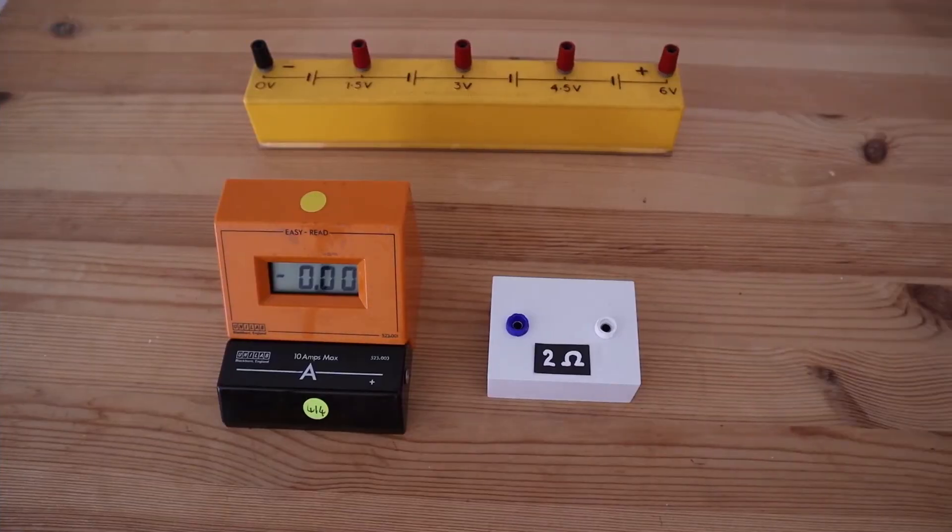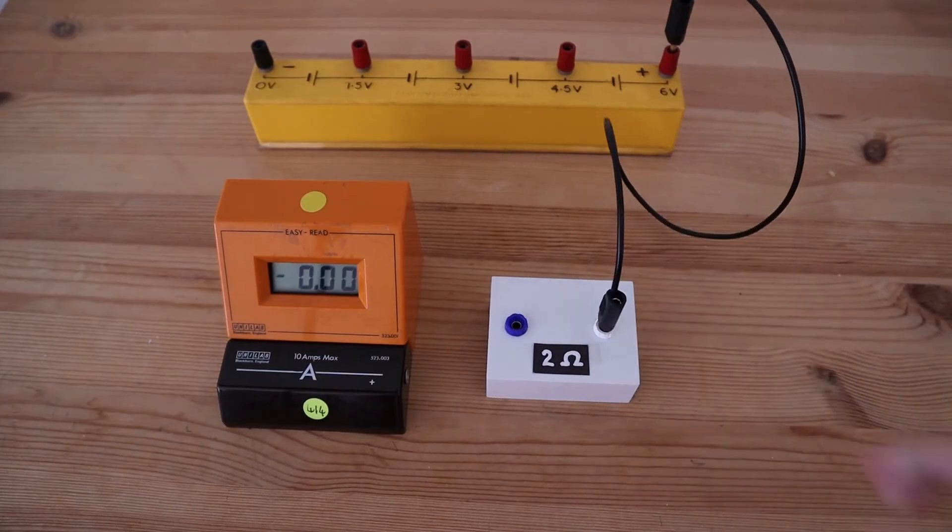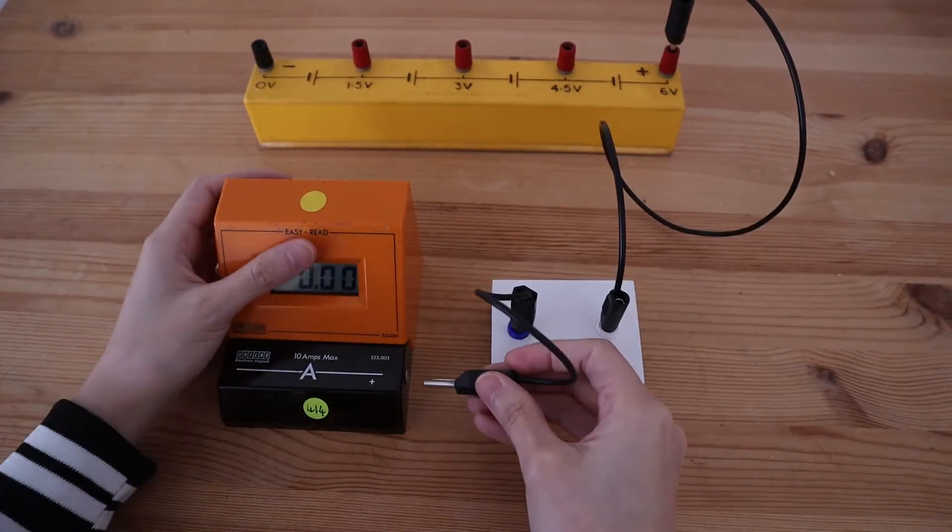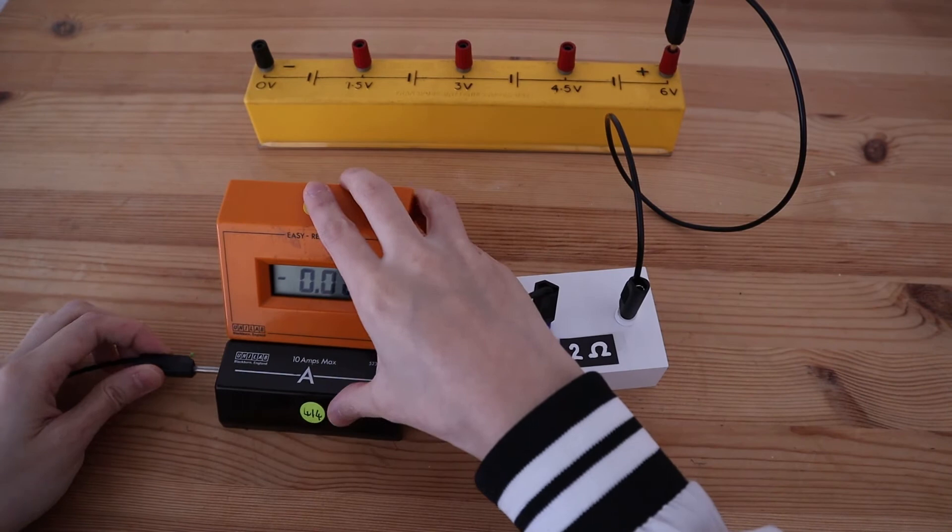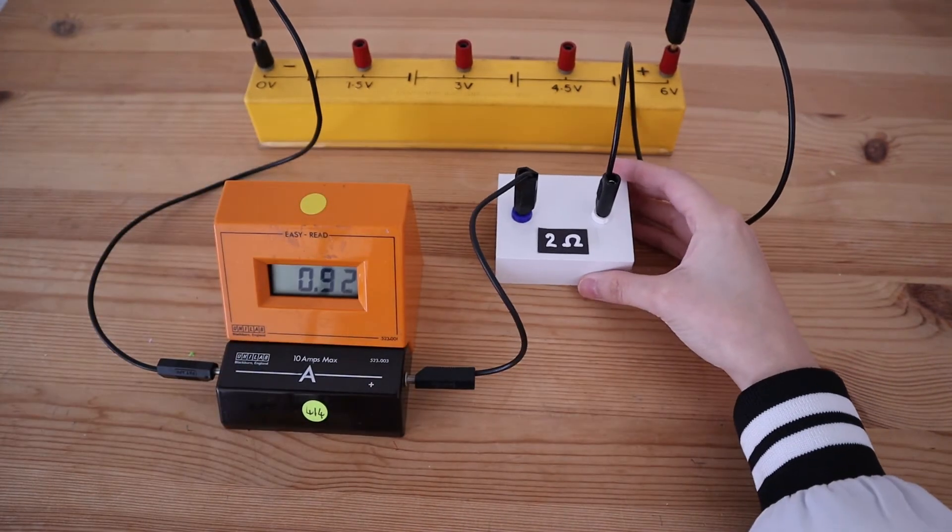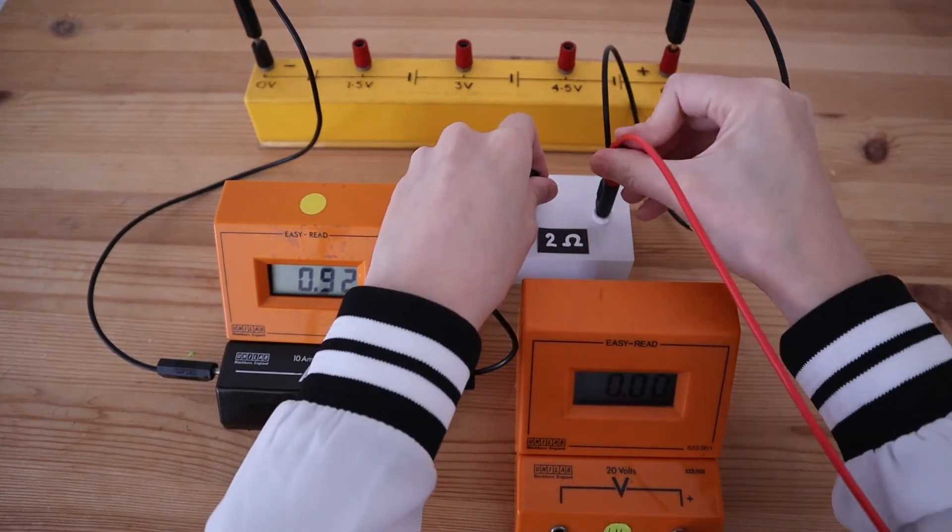So let's get started on the experiment. Connect the resistor in series with the battery pack and the ammeter. Once the series circuit is complete, we can connect the voltmeter in parallel across the resistor.